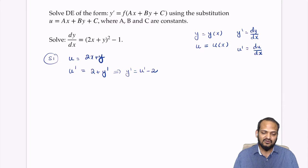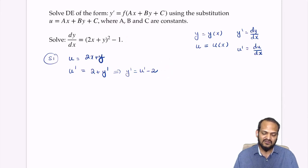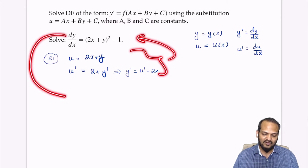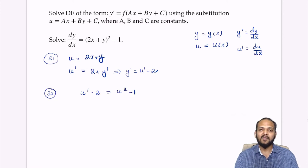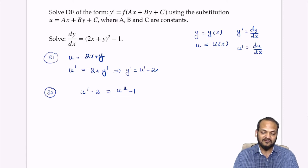Now I'm going to plug this back in. Step 2: substituting in gives us u prime minus 2 is equal to u squared minus 1. Now I'm going to simplify this.